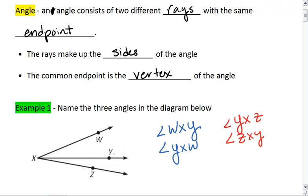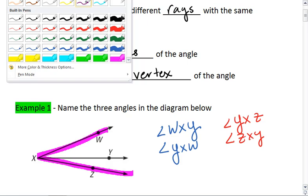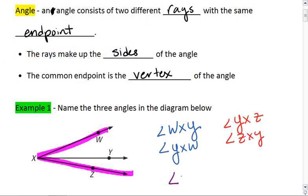And then lastly, we have the big angle, which we can name angle WXZ or angle ZXW.